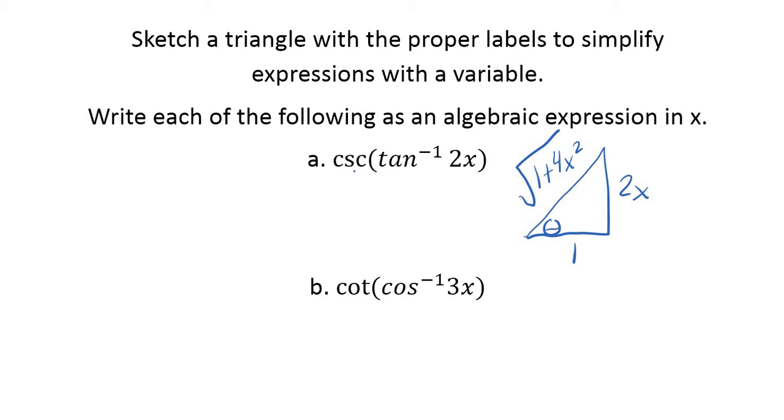Now if I want the cosecant of that, remember cosecant is a reciprocal of sine. So sine would be 2x over this. So I'm just going to flip it. And so it's going to be the square root of 1 plus 4x squared all over 2x. And that would be my algebraic expression. Now it's kind of messy looking, I know.